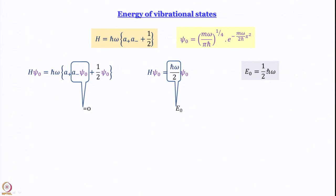Even if you take the oscillator down to 0 Kelvin, it will still oscillate with energy (1/2)ℏω, and ψ_0 will be the only state occupied. In fact, for most molecular harmonic oscillators, this is the only state occupied at room temperature anyway. E_0 = (1/2)ℏω.